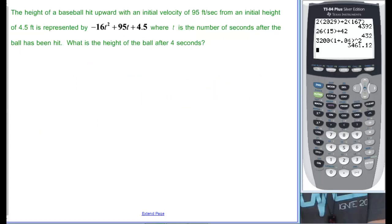One final problem. The height of a baseball hit upward with an initial velocity of 95 feet per second from an initial height of 4.5 feet is represented by this. And there's your 95 and there's your 4.5. So they're already taken care of. Where T is the number of seconds after the ball has been hit. So what is the height of the ball after 4 seconds? Look at our variable, it's T. And we want to know after 4 seconds, so we're going to let that be 4.